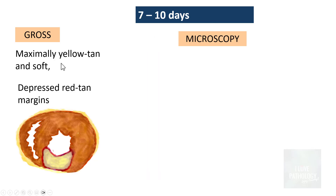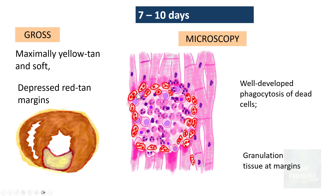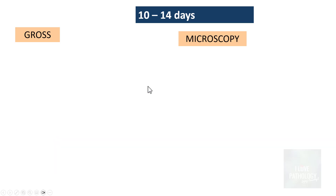Around seven to ten days, the infarct is maximally yellow tan and very soft. The surrounding margins are depressed and red tan due to the formation of granulation tissue at the margins. By now you find well-developed phagocytosis and classically marginal presence of granulation tissue with proliferating new leaky capillaries.